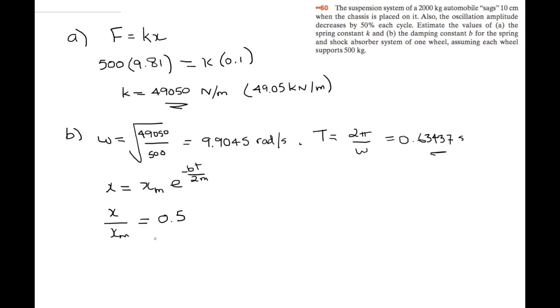0.5 is equal to e to the negative b times 0.63437 over 2 times 500. And if we rearrange this,